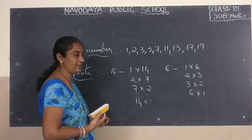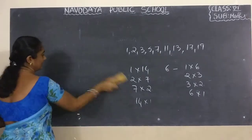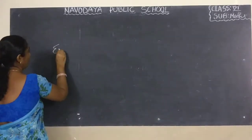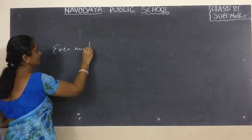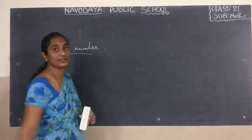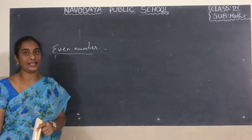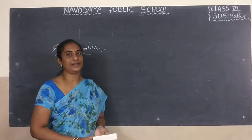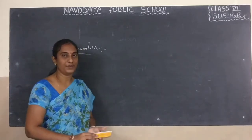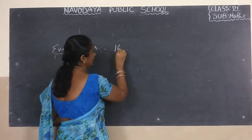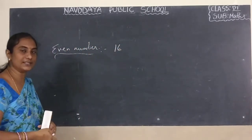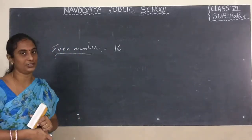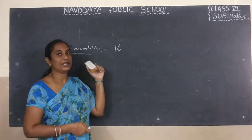The next topic is even numbers. What is the meaning of even numbers? A number which is exactly divisible by 2 is called an even number. For example, 16 — is 16 divisible by 2? Yes. In the 2 times table, how many times do we get 16? 8 times. So 16 is divisible by 2 and is an even number.